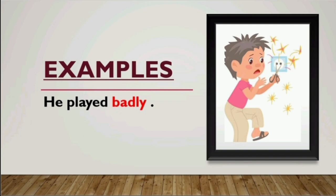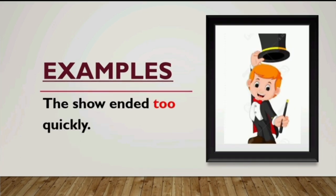Now let's have a look at some examples to understand the topic better. The first example is: 'He played badly.' How did he play? Badly. So here the adverb 'badly' is describing the verb 'played,' and therefore 'badly' is an adverb.